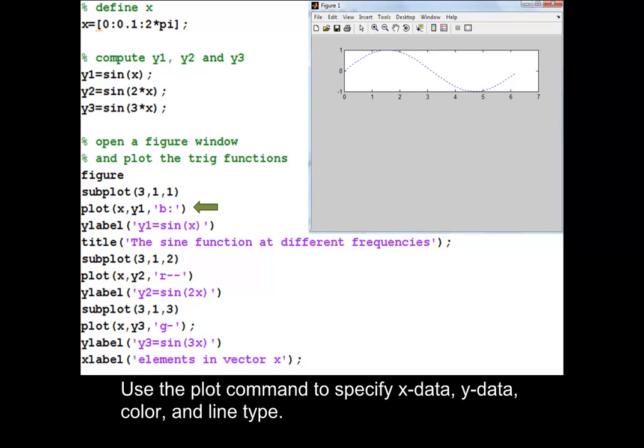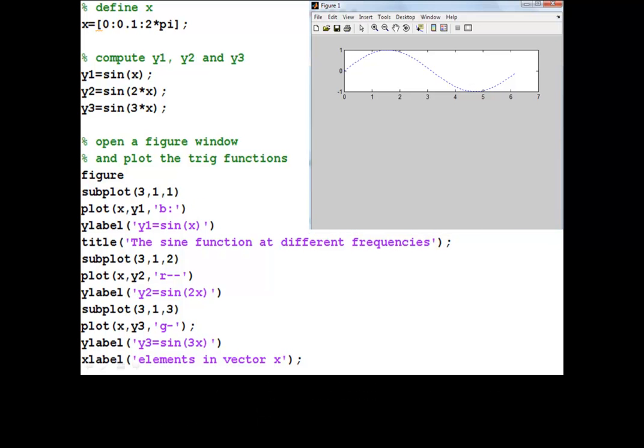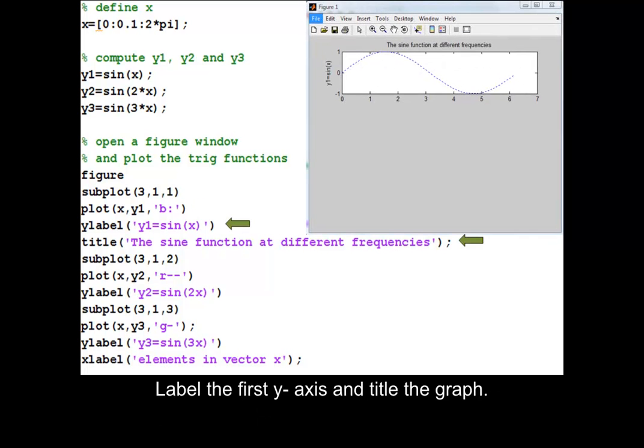Use the plot command to specify X data, Y data, color, and line type. Label the first Y axis and title the graph.